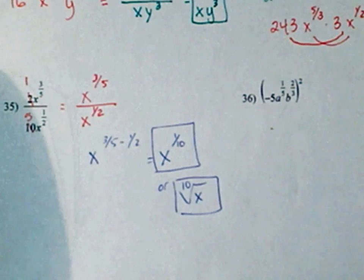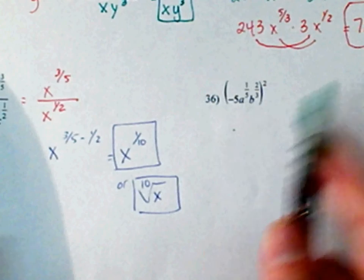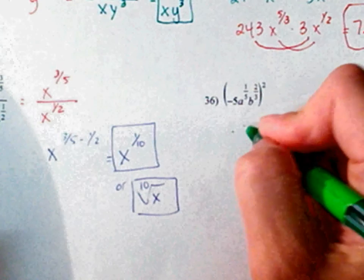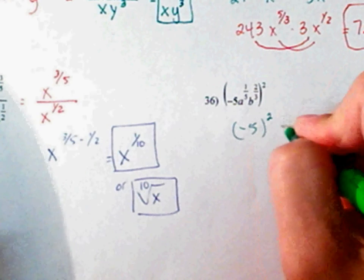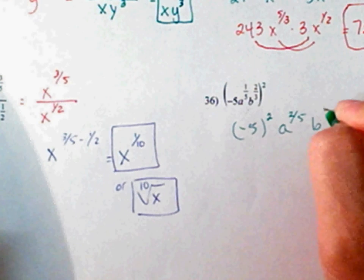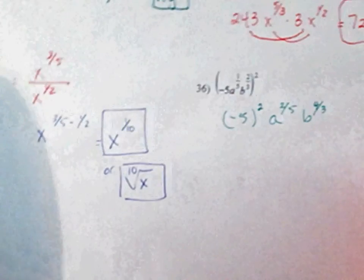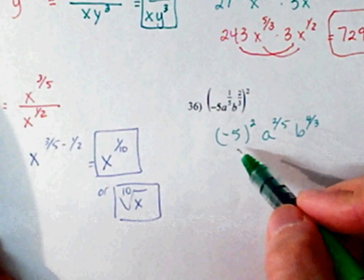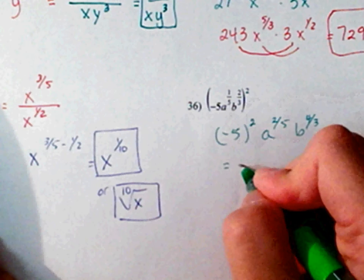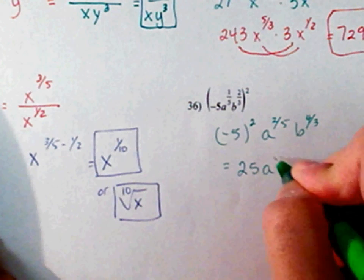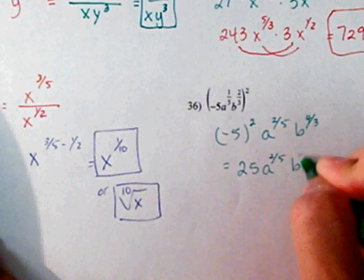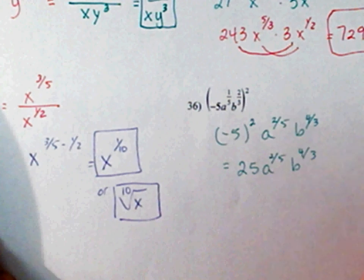Thirty-six. That square goes with that negative 5 also. So, it's negative 5 square, a to the 2/5, b to the 4/3. You're squaring your negative 5. What's negative 5 times negative 5? Twenty-five. A to the 2/5. B to the 4/3. Bases are not the same. So, you can leave your answer just like that.